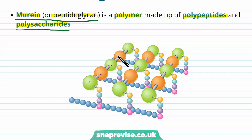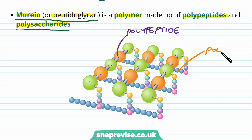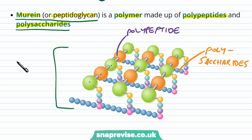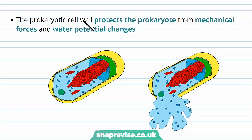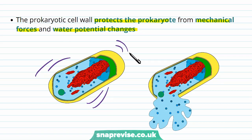Murine, otherwise known as peptidoglycan, is a polymer made up of polypeptides and polysaccharides. Here we can see a polypeptide — a chain of amino acids — and we can also see polysaccharides. Together, the combined mesh of polypeptides and polysaccharides makes up the cell wall, which we call peptidoglycan. Another way to remember the name is that peptidoglycan contains both the word 'peptid' and 'glycan,' meaning protein and sugar respectively. The cell wall protects against mechanical damage and changes in water potential — if water potential outside is very high and water starts entering the cell, it stops the cell from bursting open.